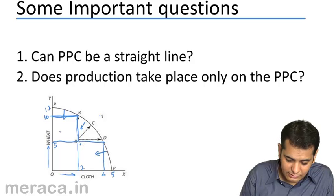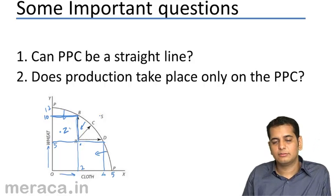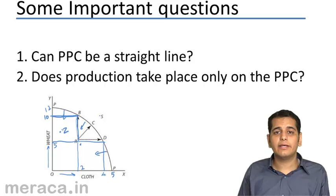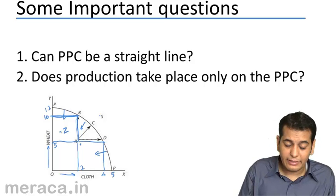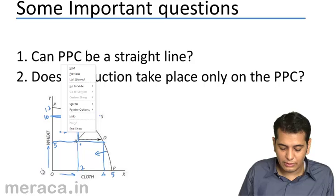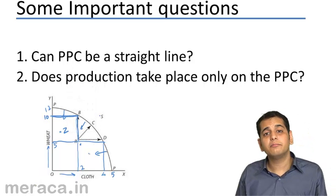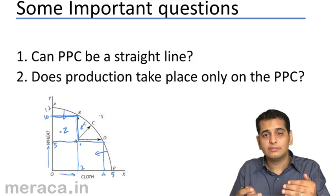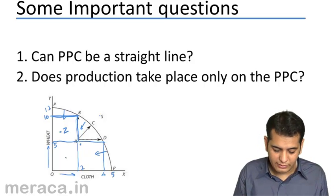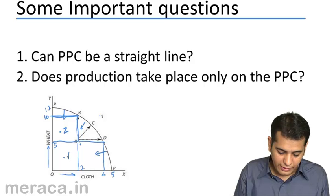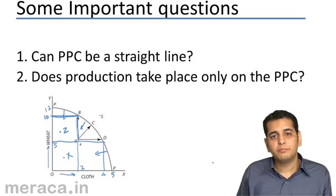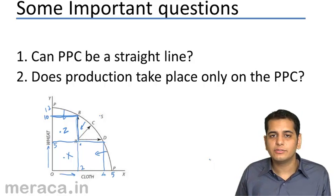Let's consider a point Z here. What will be the situation in case of Z? In case of Z, I will again be underutilizing my resources, because it is inside the PPC curve. The same would be the case if I take a point X here — it is again inside the PPC. So the resources are being underutilized.